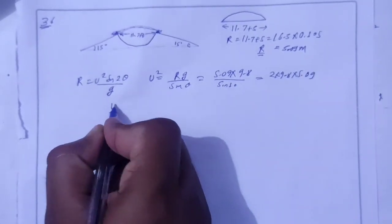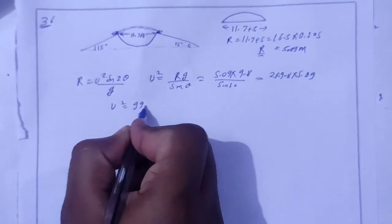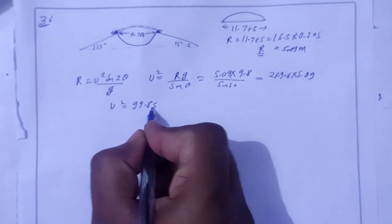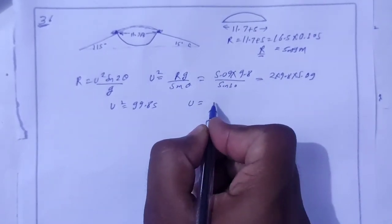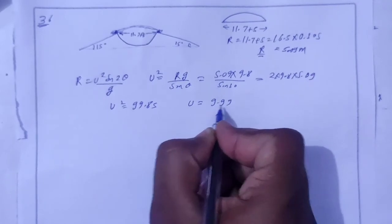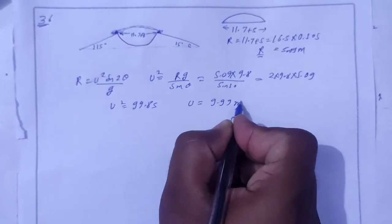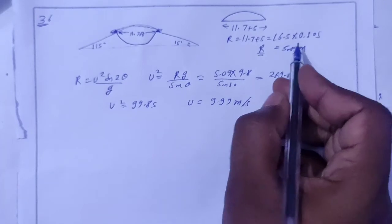This gives u squared equals 99.8. Taking the root, u comes out to be 9.99. This is in meters per second. Now we need to convert to feet.